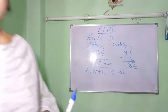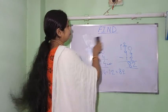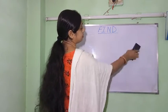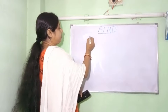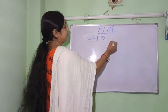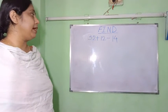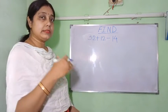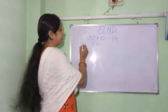Now let us do the opposite — first plus, then minus. Let us write: 52 plus 12 minus 14. Whatever we did before — first minus then plus — here we will do plus then minus. We write step 1.